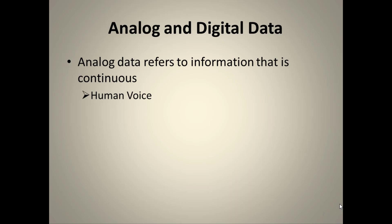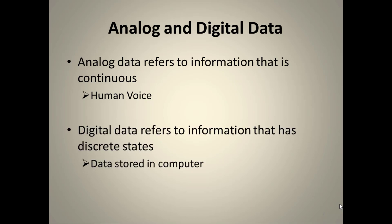Analog data refers to information which is continuous in nature — human voice is an example of analog data. Digital data has a discrete number of states. Analog data has infinite states, while digital data has discrete states. An example of digital data is data stored in a computer.